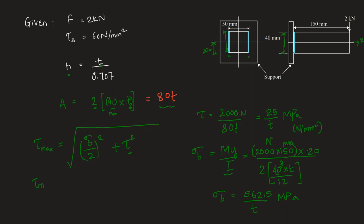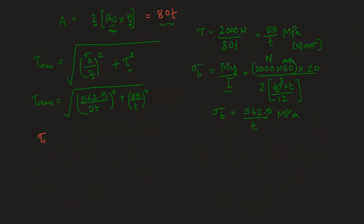Putting this here we have tau max is equal to under root of 562.5 divided by, don't forget this 2, so we have 2t square plus 25 by t square so this gives us tau max is equal to 282.36 by t. In the denominator we will get t square after solving and taking the square root we will get t. This should be less than or equal to the shear strength. Now taking the limiting condition that is equality we will have tau s will be equal to 282.36 by t and t will be therefore equal to 282.36 divided by the shear strength is 60 so thickness should be 4.7059.